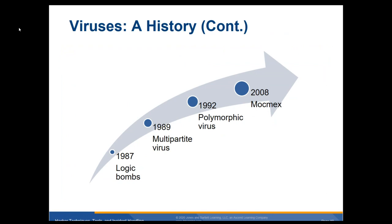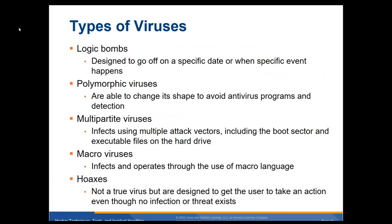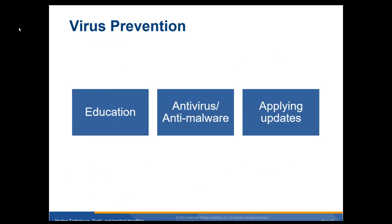Different types of viruses: logic bombs are designed to go off at a specific date or event. Polymorphic viruses are able to change their shape to avoid antivirus programs. Multi-partite viruses infect using multiple attack vectors including the boot sector and executable files, placing themselves in multiple locations. Macro viruses infect and operate through a macro language like a script in an Excel spreadsheet or Microsoft Word. Hoaxes are not true viruses but are designed to get the user to take an action even though no infection or threat actually exists — basically to scare you into doing something.